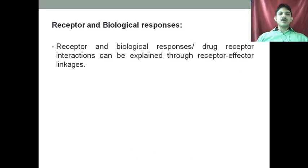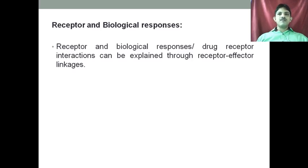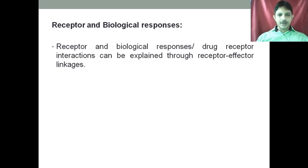Whenever we talk about receptor and biological responses, this is very important because the drug-receptor interaction can be explained through the receptor-effector linkage. In our previous section, we discussed four categories of receptors: ligand-gated ion channel receptors, G-protein coupled receptors, kinase-linked receptors, and nuclear receptors. Whenever the drug binds to these particular receptors, they may act through different mechanisms.